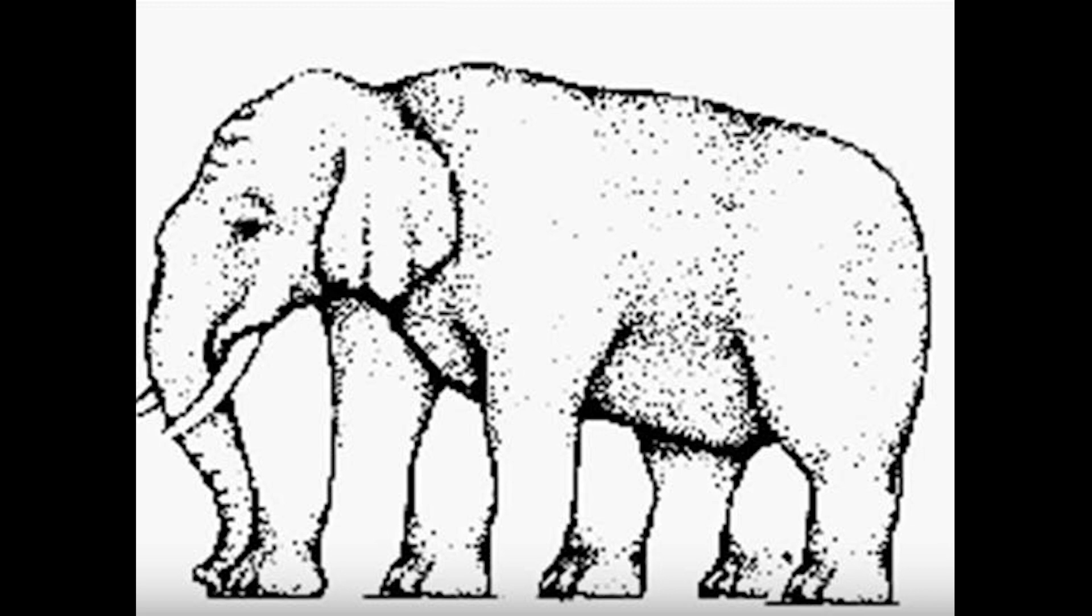Some blindsighted people can intuitively sense what you're showing them. They may not be able to perceive exactly what it is but they get a feeling that the picture is one of an animal or item of food or clothing.